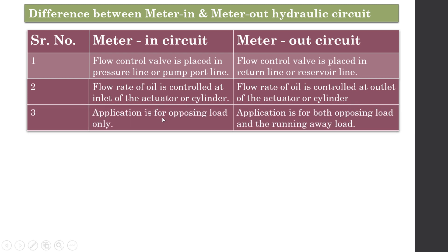The third difference concerns load type. The meter-in circuit is used for opposing loads only — where the cutting force acts against the direction of motion of the table or cross slide. The meter-out circuit is used for both opposing loads and running away loads. A running away load means the load acts in the same direction as the feed direction, which may cause stress in the piston or piston rod.